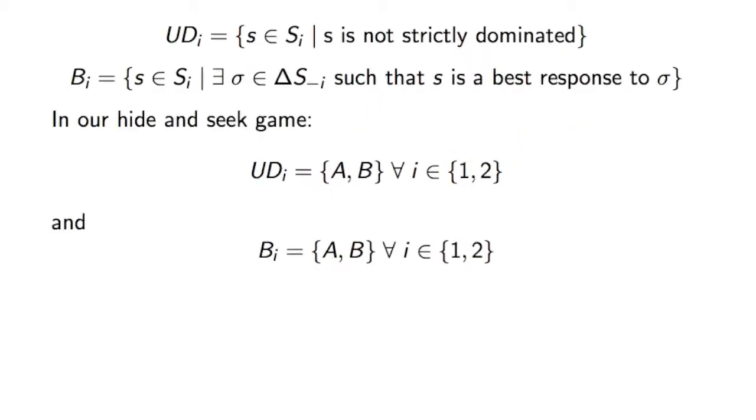Now there are two definitions that we have to look at here. The undominated strategy set for player i, UD_i, is the set of all strategies s of player i that are not strictly dominated by any other strategy.